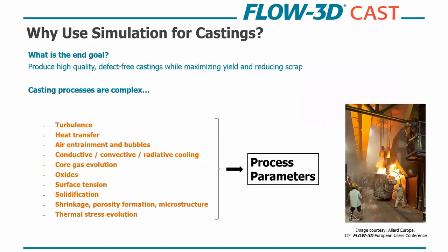Now to motivate and give us a foundation for our discussion today, we'll ask the simple question, why are we using simulations for casting? What is our end goal? As with most manufacturing processes, we want to produce high quality defect-free castings while maximizing yield and reducing scrap. This is where virtual manufacturing comes into place because castings are a very complex process. You have things such as turbulence, practical heat transfer, air entrainment and bubbles, you can have conductive, convective and radiative cooling, core gas evolution if you're using sand cores, you can have oxide formation in the metal front and you have to deal with surface tension through filling through thin sections of your casting as well. That's all in the filling phase.